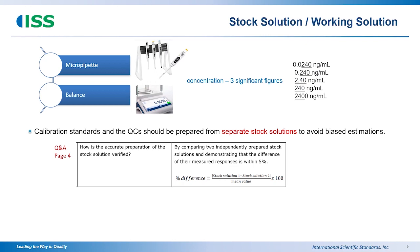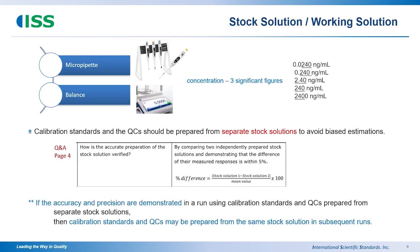Internal standard and reference standard are used to produce stock solution and working solution. My recommendation is three significant figures for the effective number — meaning the balance and micropipette satisfy these three significant figures for concentration. To confirm whether the stock solution is well prepared: the calibration standard and QC should be prepared from separate stock solutions, and when compared, if the difference is less than 5%, that would be a reliable stock solution. This stock solution will then be used to generate working solution, and accuracy and precision are verified.